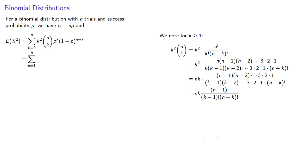Now note that n minus 1 minus k minus 1 is n minus k, so this expression becomes nk times n minus 1 choose k minus 1.